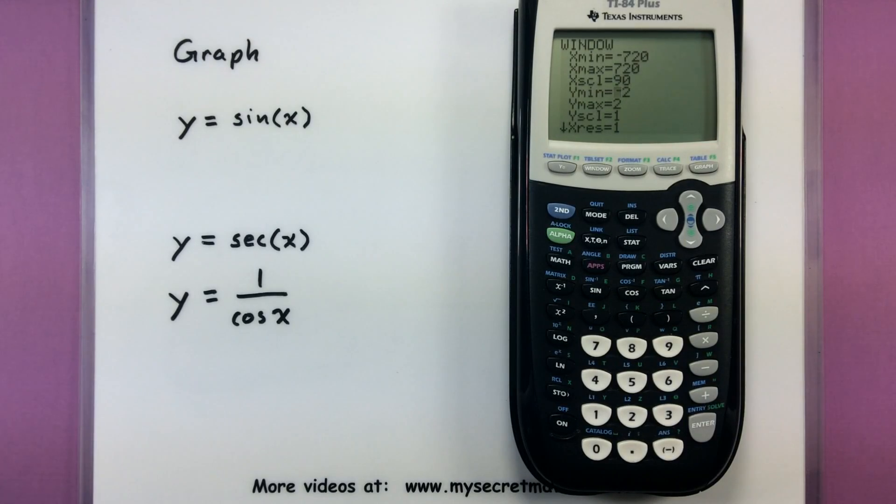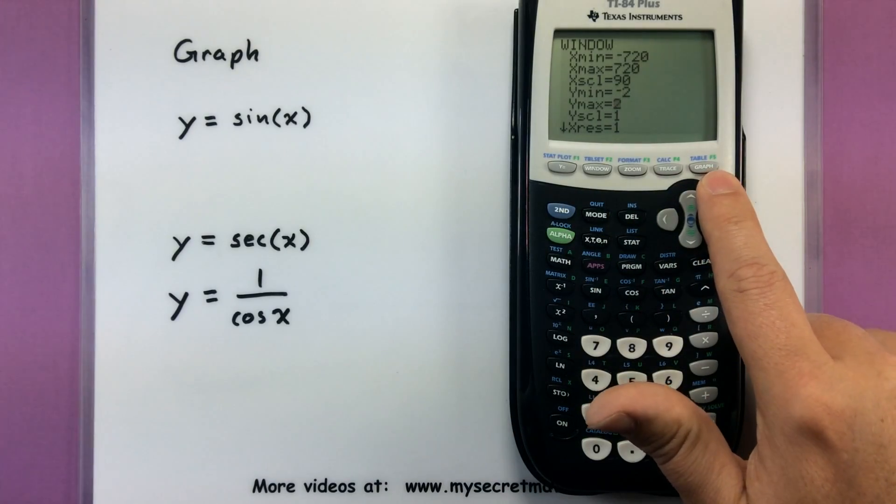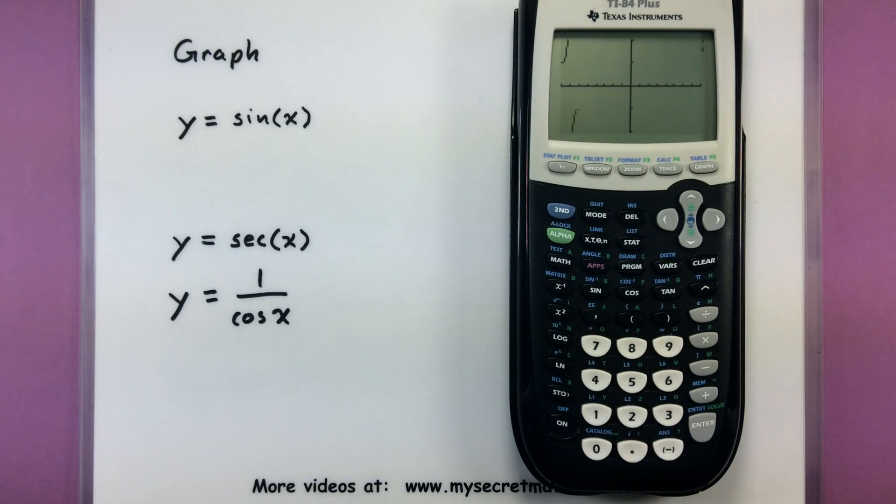For the y minimum and y maximum, we'll go ahead and leave that there because that's still the output of the function. It's still going to give us values between 1 and negative 1. So everything is set. Let's go ahead and press graph. And there's our same trigonometric function. It doesn't look like a whole lot has changed, but that's because we adjusted our window correctly so it actually looks really good.